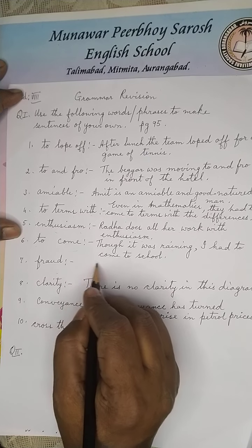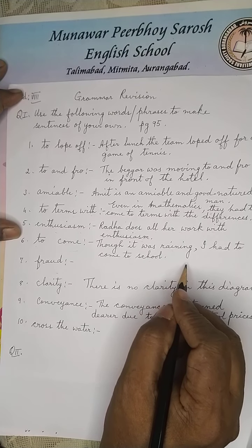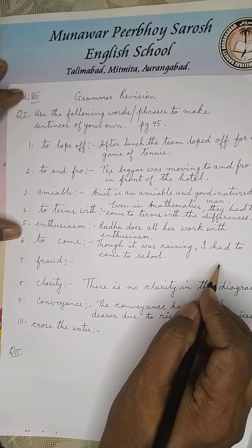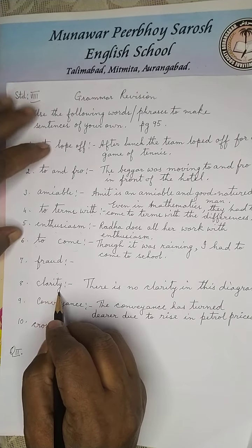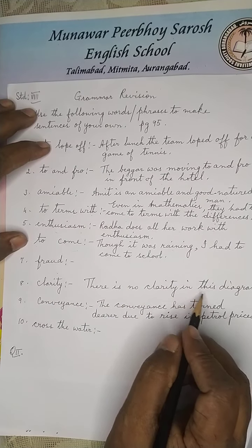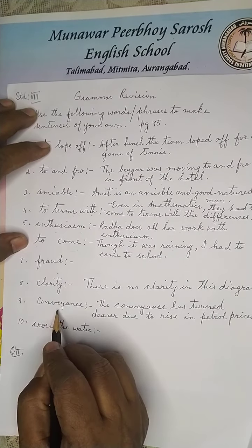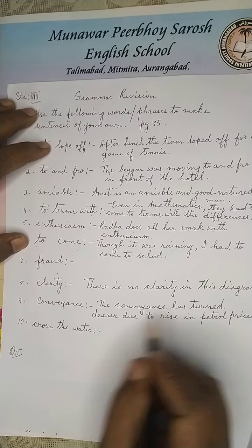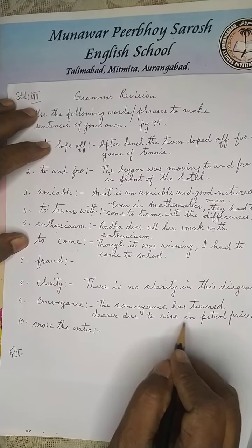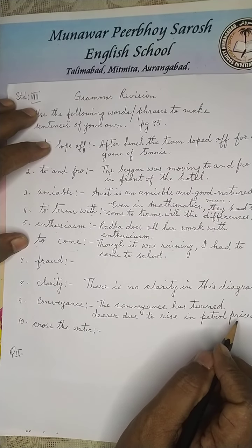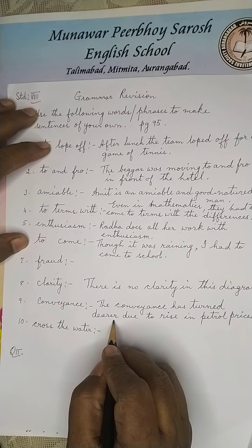Fraud: He is known for his behavior — that is fraud. Clarity: There is no clarity in this diagram. Conveyance: The conveyance has turned dearer due to a rise in petrol prices. Dearer means costly.